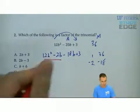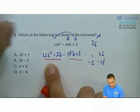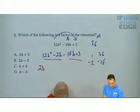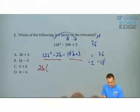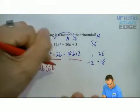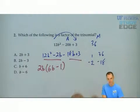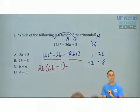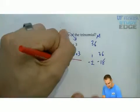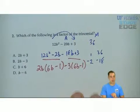GCF with the first two. GCF with the next two. What's in common with the first two? A 2 and a b. Leaving me with 6b minus 1. What's in common with the last two? Well, I've got to drop the negative, which means all the signs are going to change. This will be by 3. Leaving me with 6b minus 1 again.